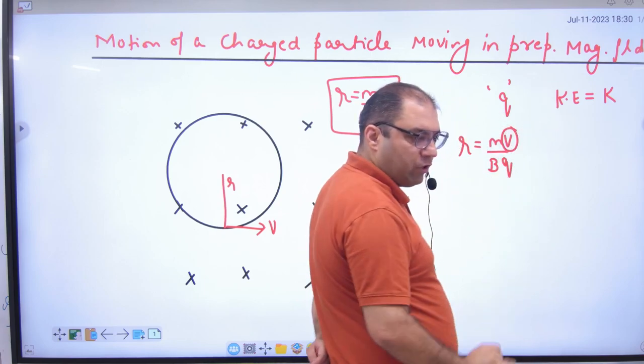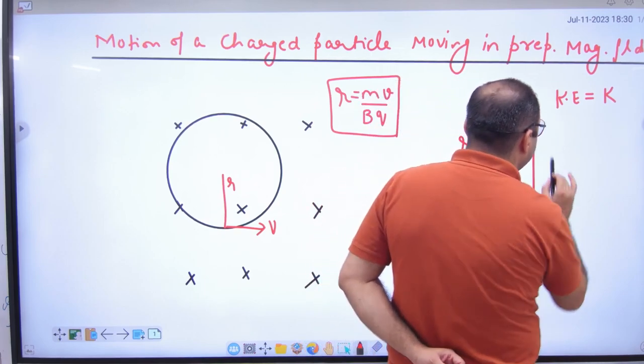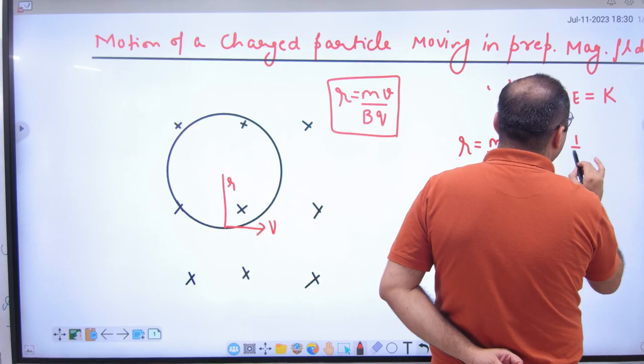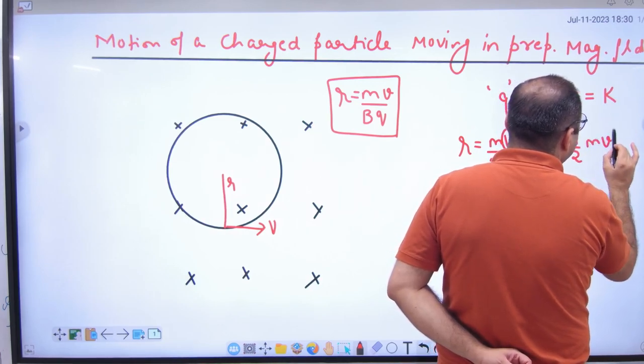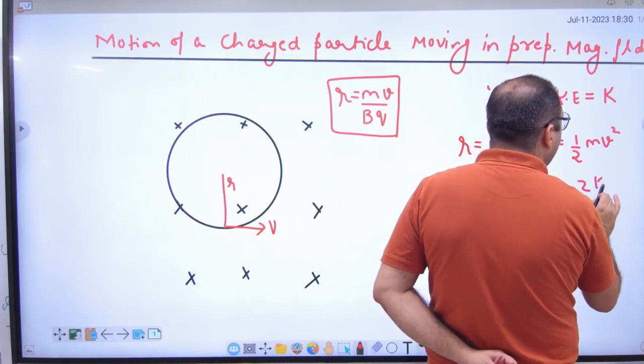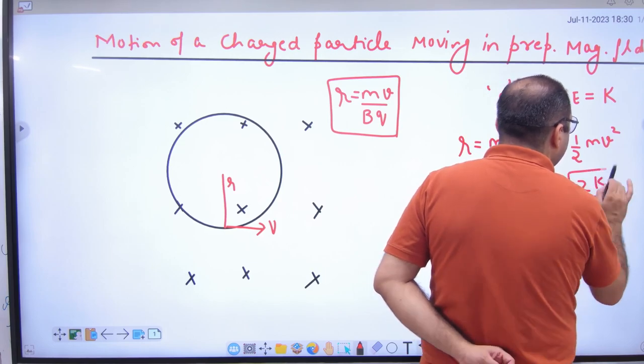Kinetic energy is equal to half mv squared. So velocity equals the square root of 2K by m.